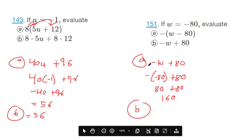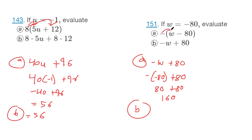And for B, we can jump right to the answer of 160 because look, this is what this is when you distribute the negative sign. Negative W and then negative negative 80 makes a positive 80. So this is also going to be 160.